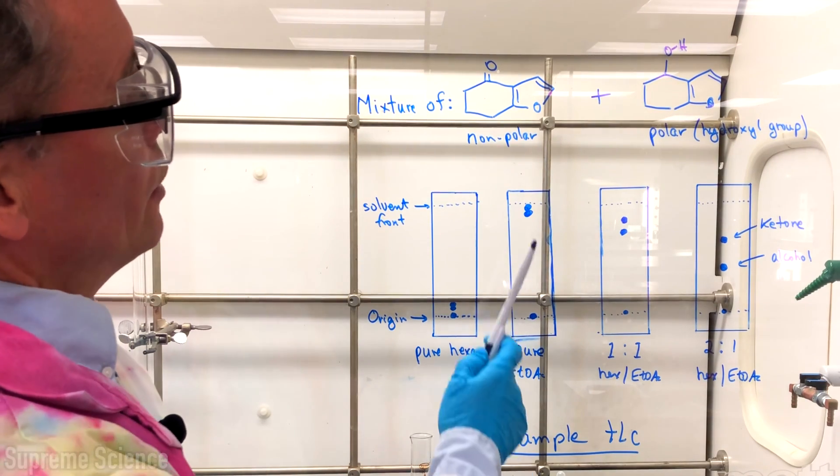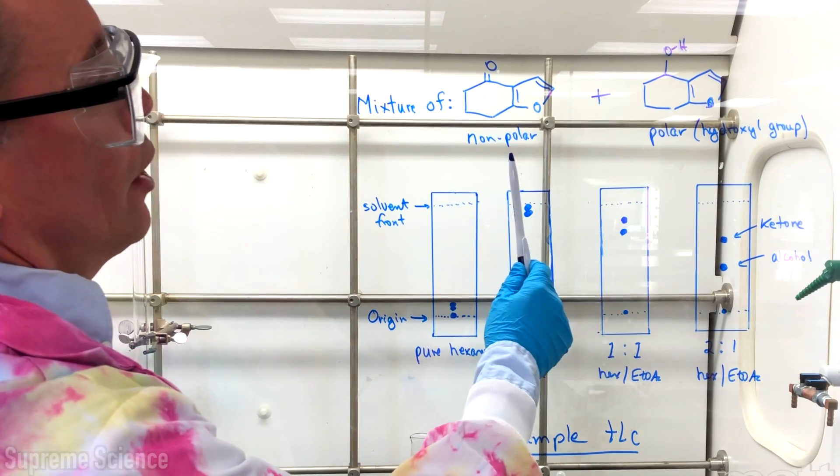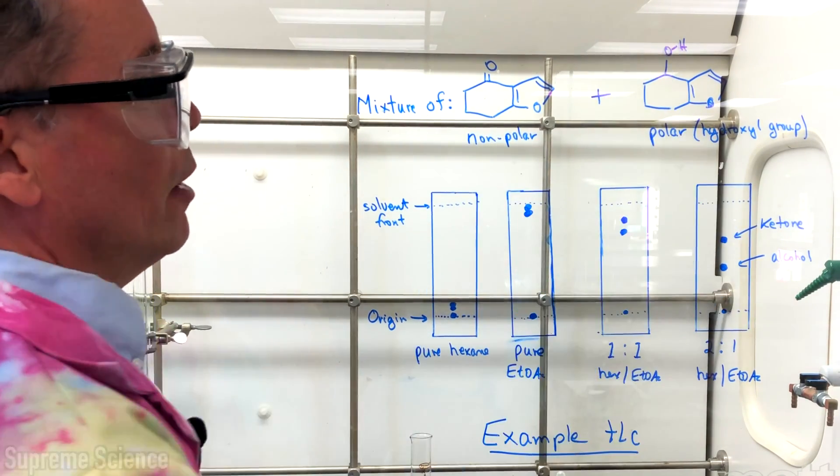In the example shown here, we want to separate a mixture of this ketone from this alcohol. The ketone is non-polar, the alcohol is polar because of this hydroxyl group.